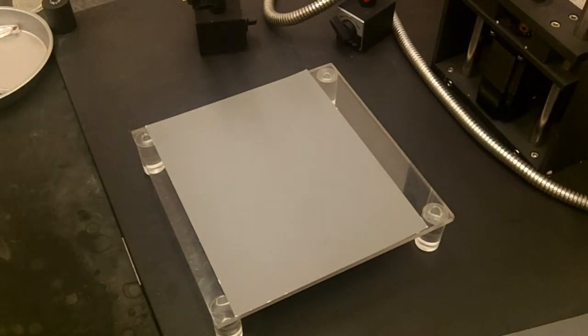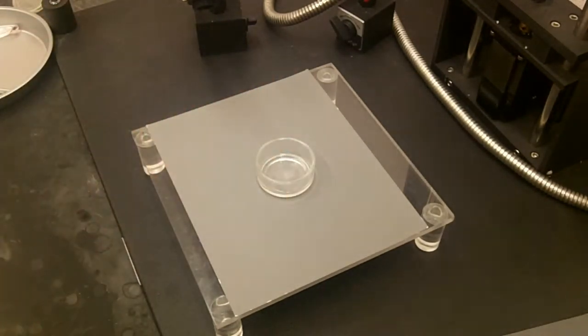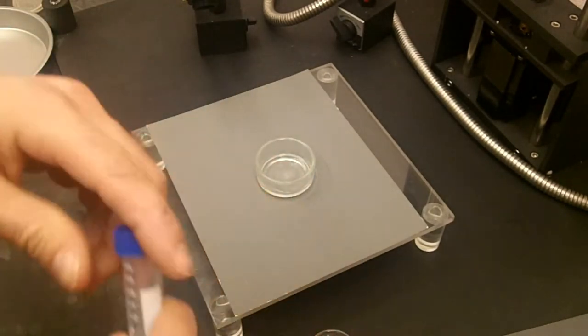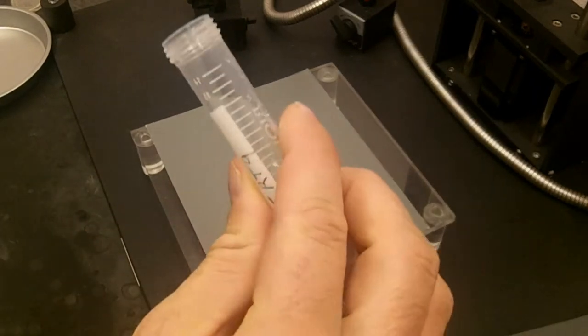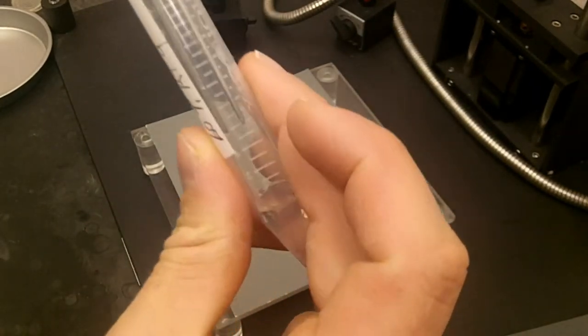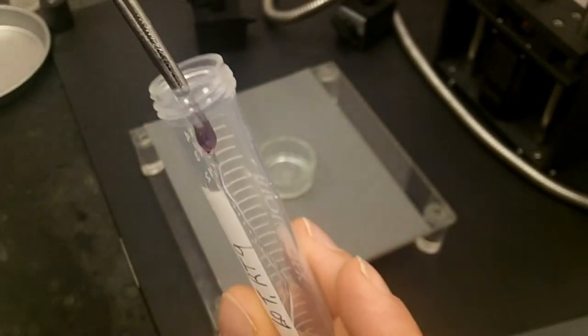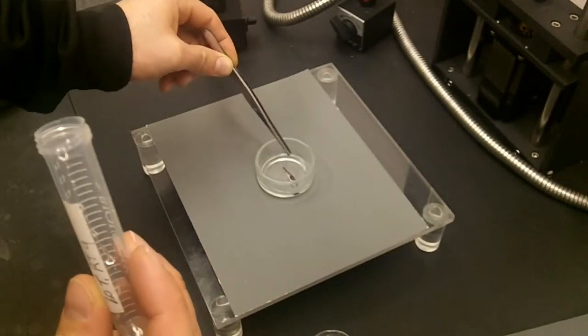We have our container for the fish and the glycerol, and then we have our fish here and our glycerol here. So what we're going to do is we're going to use some forceps to remove the fish from the glycerol in which it's stored in, and then we will place this in the container which we will be imaging.